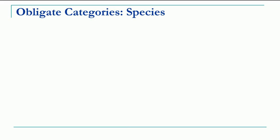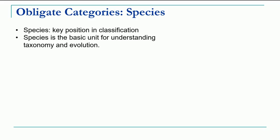In today's lecture we will stick to these seven obligate categories. The lowermost category is species. Species occupies a key position in classification — we always say that species is the basic unit for understanding taxonomy and evolution.